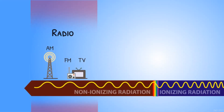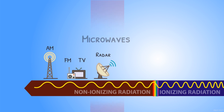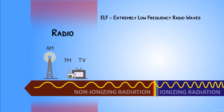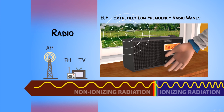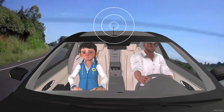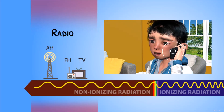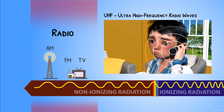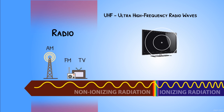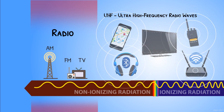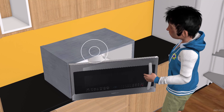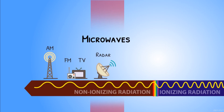From the non-ionizing side of the spectrum, we can start classifying sources of radiation that you might be familiar with. Starting with ELF or extremely low frequency sources, for example, transmitted signals of AM radio stations, radio waves from FM radio stations, and cell phones. Cell phones use a frequency known as UHF or ultra-high frequency. The same transmission is used for other forms of communication like TV broadcasting, GPS, walkie-talkies, Bluetooth, and Wi-Fi. Microwaves are a type of electromagnetic radiation, like in radars or in your microwave ovens which use super-high frequency, or SHF.